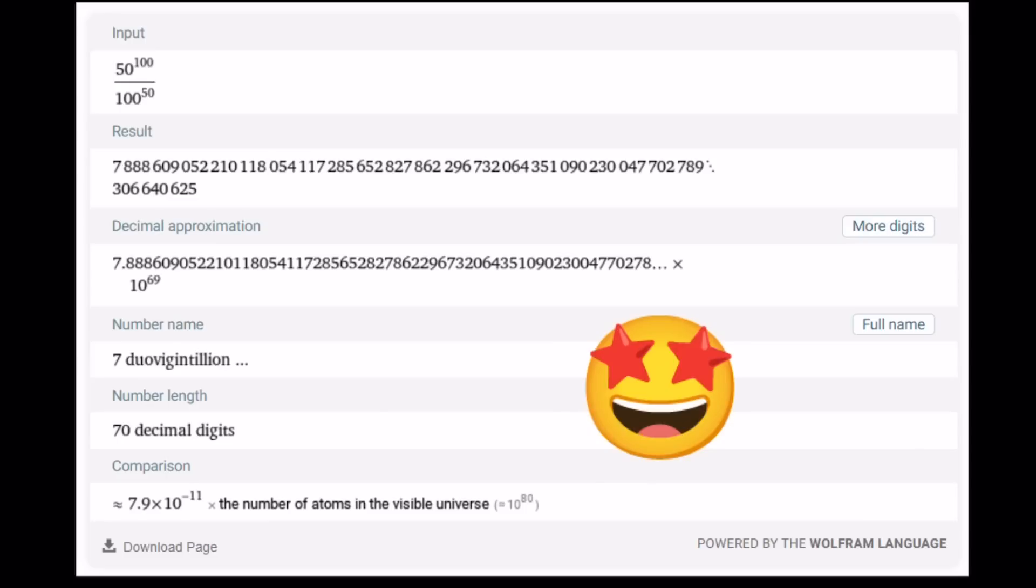And as a good comparison, I think this is pretty good. 7.9 times 10 to the power negative 11 times the number of atoms in the visible universe. So think about all the number of atoms in the whole universe, and you kind of multiply it by this super small number. Then you'll get the number you're looking for. So let's go ahead and proceed with the solutions.